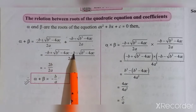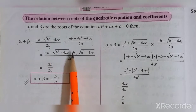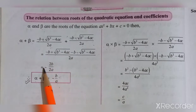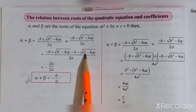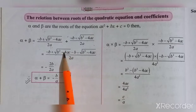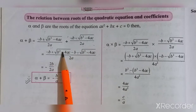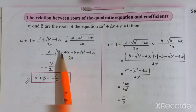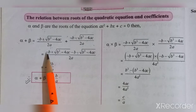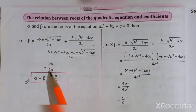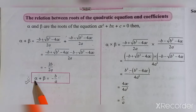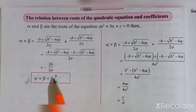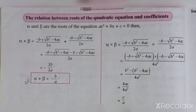After calculation, minus b plus minus b gives minus 2b. And root(b² minus 4ac) minus root(b² minus 4ac) — these two roots are the same, so they get cancelled and become zero. So the numerator is minus 2b and the denominator is 2a. The 2 in numerator and denominator cancel, giving us alpha plus beta equals minus b upon a.